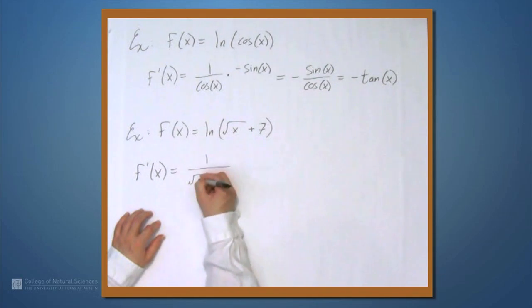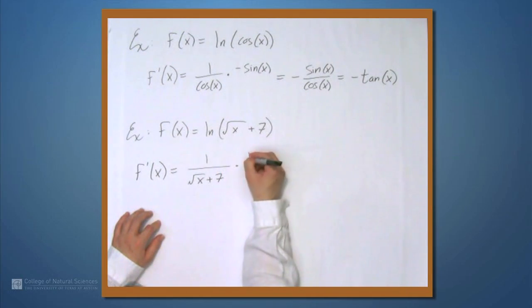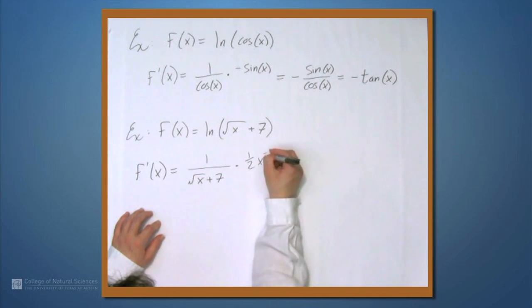So 1 over the square root of x plus 7 times the derivative of whatever's inside. 7 disappears, so it's times the derivative of the square root of x. And the derivative of the square root of x is 1 half x to the negative 1 half.